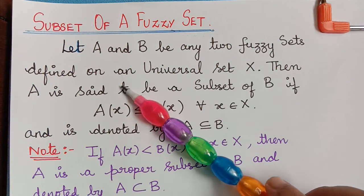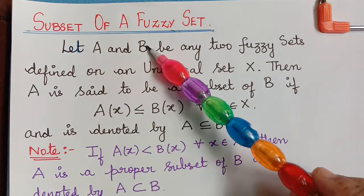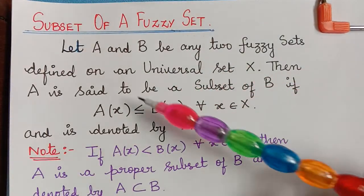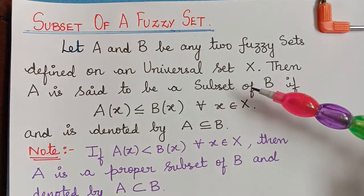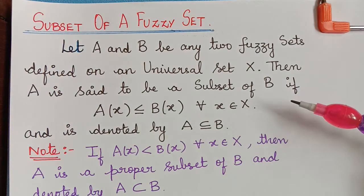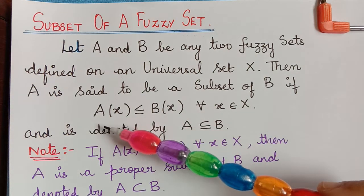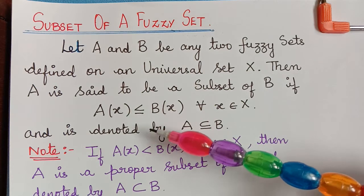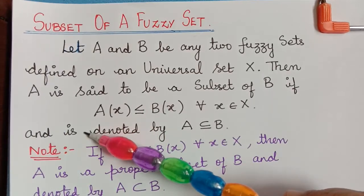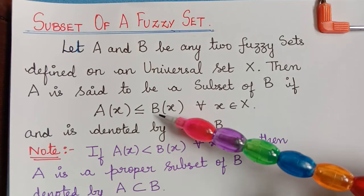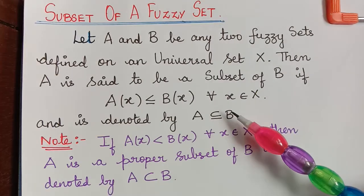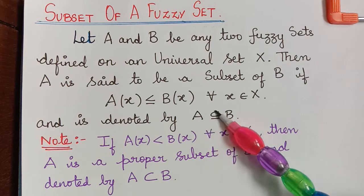Hello students. The next topic is subset of a fuzzy set. Let A and B be any two fuzzy sets defined on a universal set X. Then A is said to be a subset of B if the membership grade of X in A is lesser than or equal to the membership grade of X in B, for all X element of capital X, and this is denoted by A subset of B.